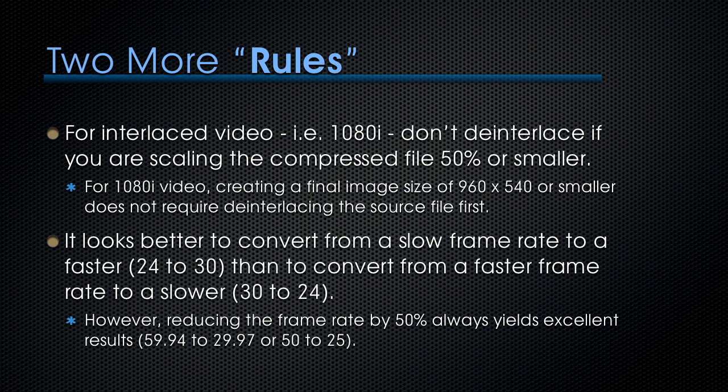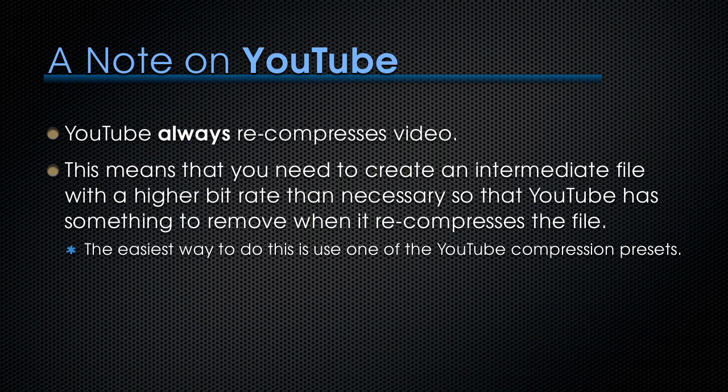With a lot of the training I do, I reduce the frame rate from 30 frames per second to 10 frames per second because most of the time I don't need the extra frames. One last note: YouTube always recompresses your video. This means you need to create an intermediate file with a higher bitrate than necessary so that YouTube has something to remove when it recompresses. The easiest way is to use one of the YouTube compression presets inside your compression software.